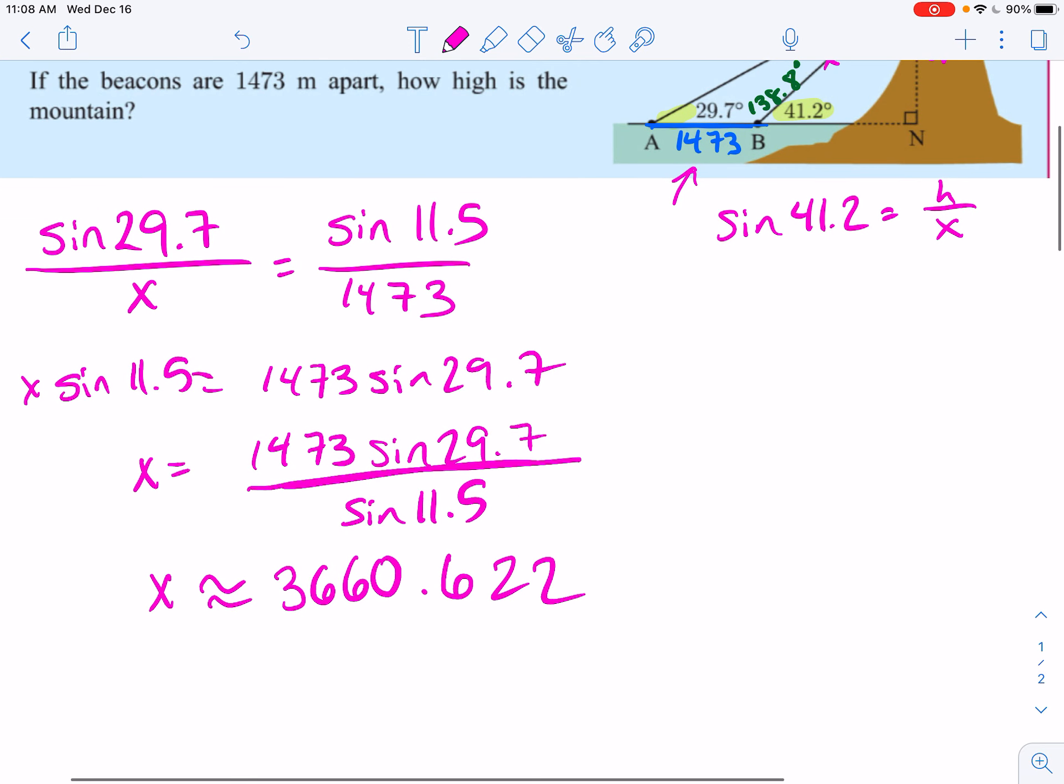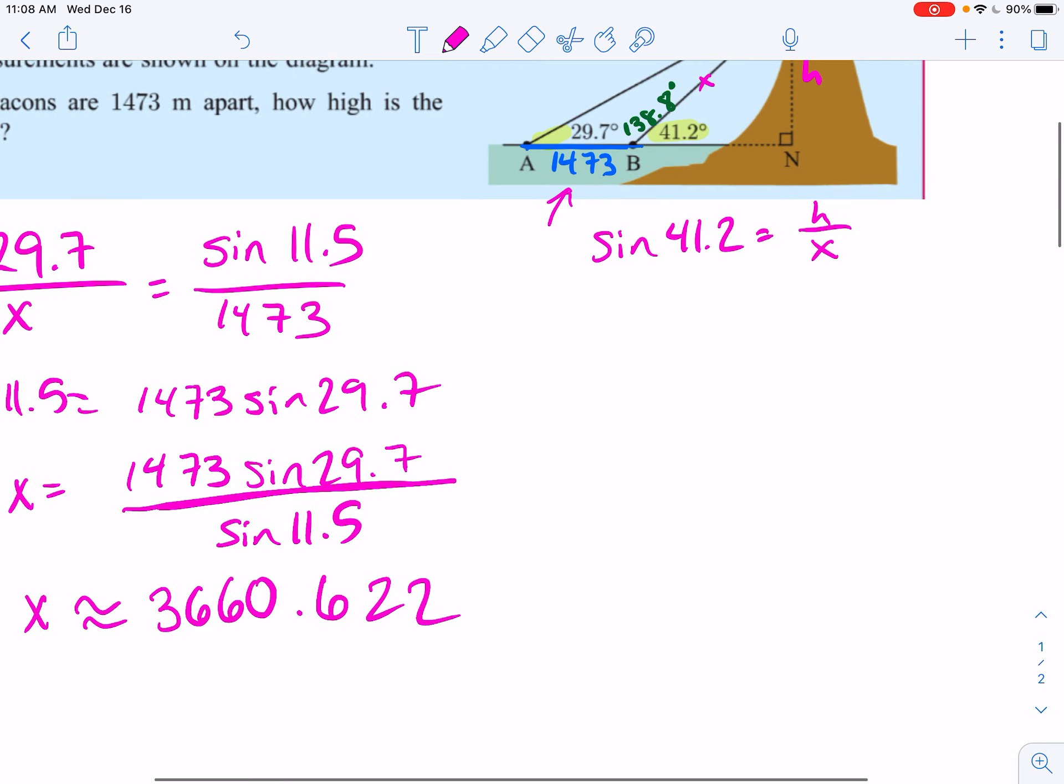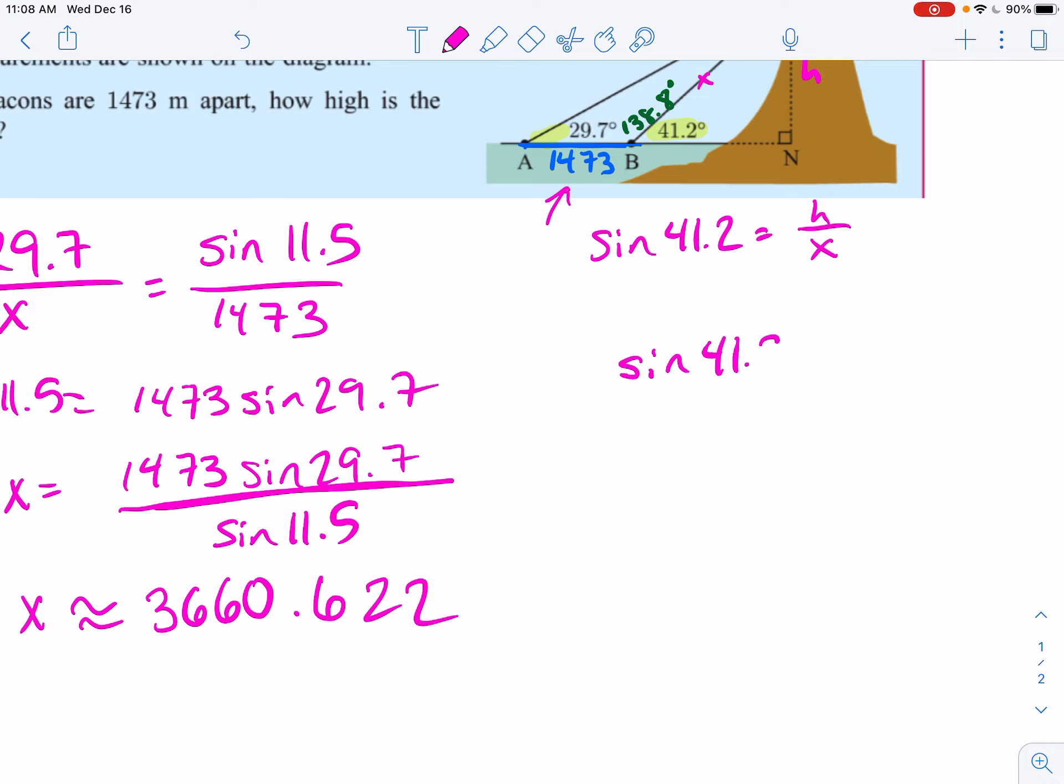Actually, what I can do on my calculator is I can store this, and if you look, the button right above the on button is an arrow, and I'm going to store that as alpha A, and so now my calculator remembers that. So, then I come over here, and I will say sine of 41.2 is equal to H over that 3660. So, therefore, H is equal to 3660 sine of 41.2. If I had rounded 3660 times sine of 41.2, I get that H is approximately 2410.803.